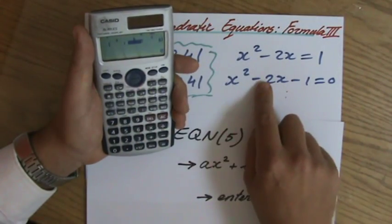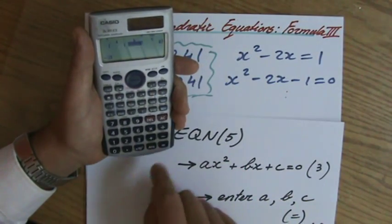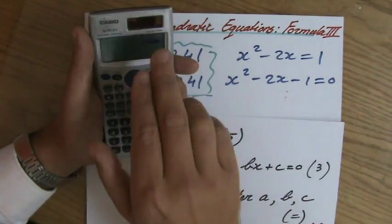Then it will bring me to B. What is the value of B? Negative 2, equals.